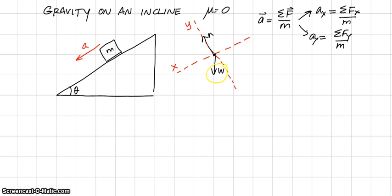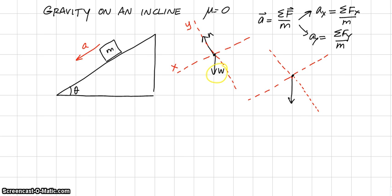We're going to break the weight vector up into its two components. To do that, I'm going to draw it by itself, straight down, and then draw the axes on top of that so I can easily see the vector with just its components.